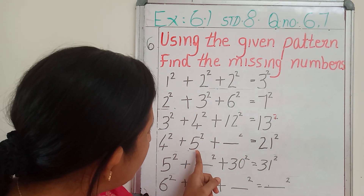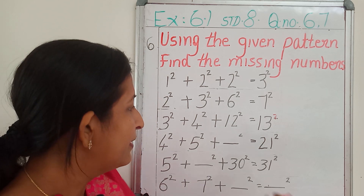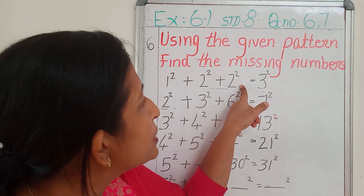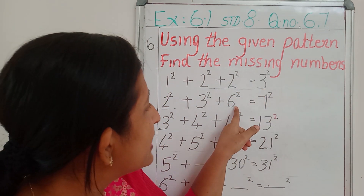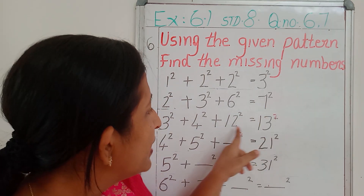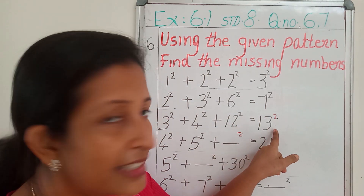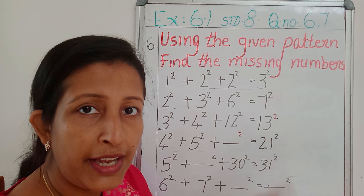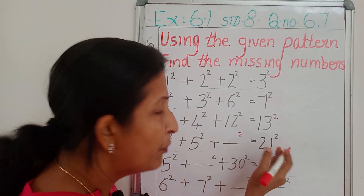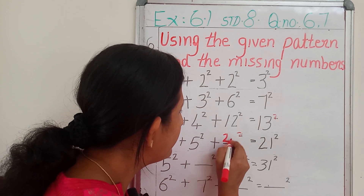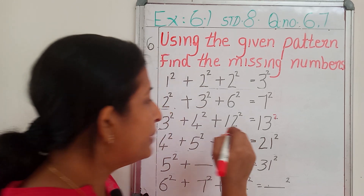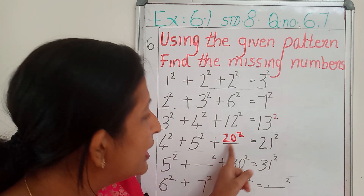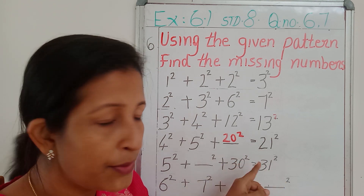4 square plus 5 square plus dash square equals 21 square. See: 2 square, 3 square, 6 square, then 7 square; 12 square, then 13 square. Like this, dash square equals 21 square. Then, definitely it will be 1 number less. That is, 20 square. So 4 square plus 5 square plus 20 square equals 21 square.